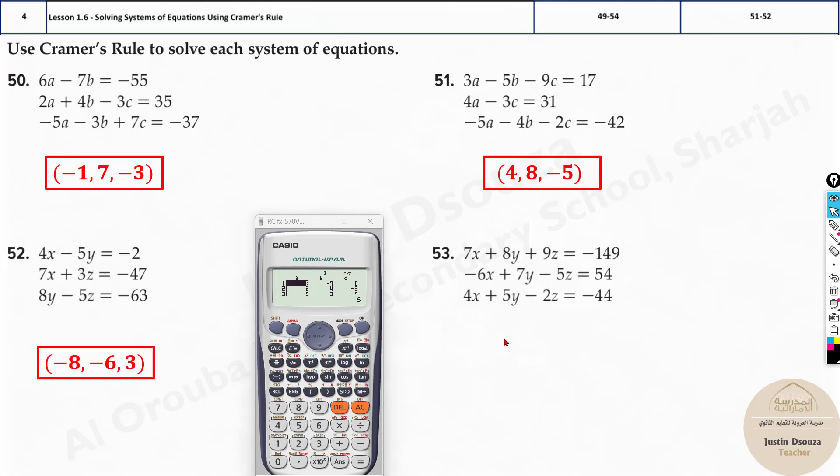That's how we do it. And if you solve it up, you should get these answers. Please do it by yourselves. Now this one looks weird, let's just try that out. 7, 8, 9, and it's -149. And then we have -6, 7, -5, and 54. Then 4, 5, -2, and -44. The values are, yes, those are the correct answers.